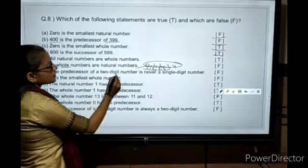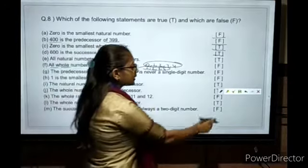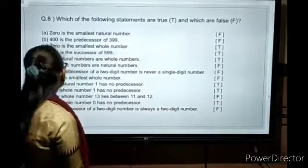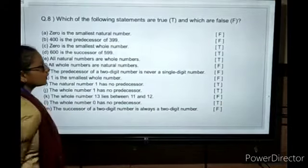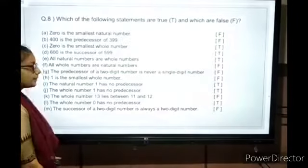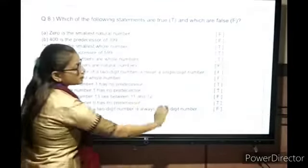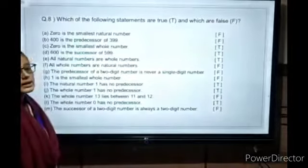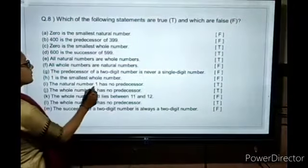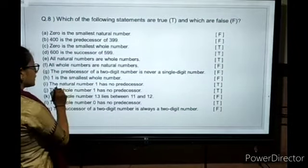The predecessor of a two-digit number is never a single-digit number - False. Next: 1 is the smallest whole number - False, because the smallest whole number is 0. The natural number 1 has no predecessor - Yes, True.